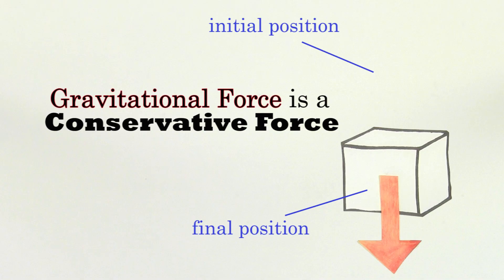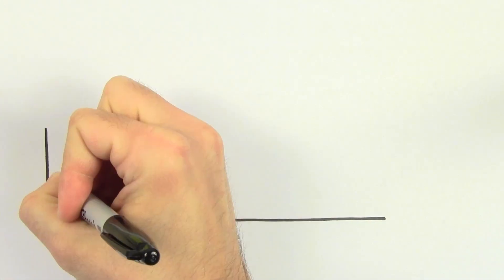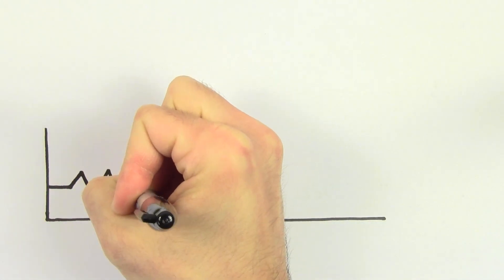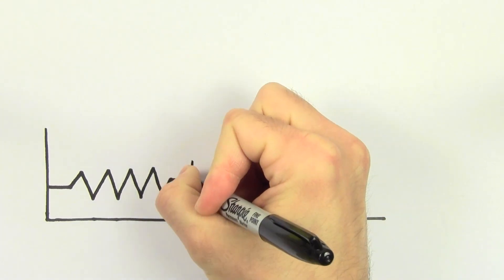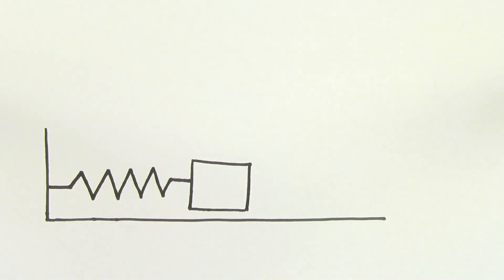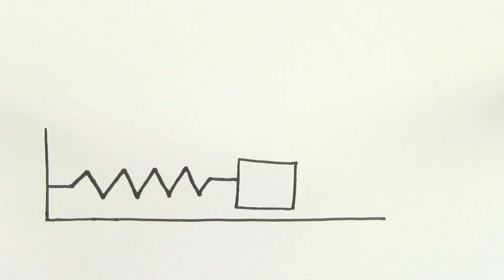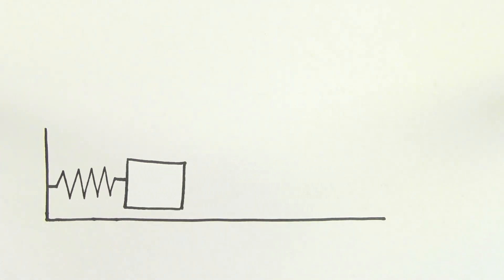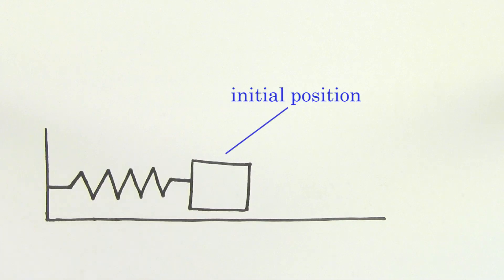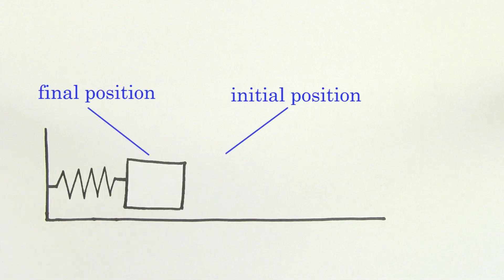The force exerted by a spring is another example of a conservative force. The total work done on a mass by a spring does not depend on the path taken by the mass — it only depends on the initial and final positions of the mass.